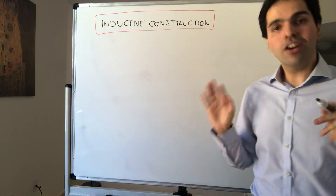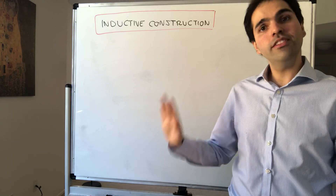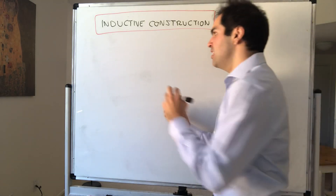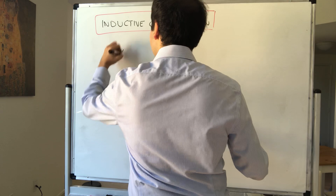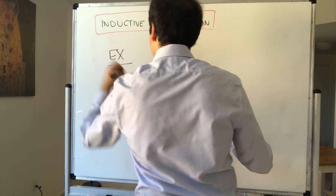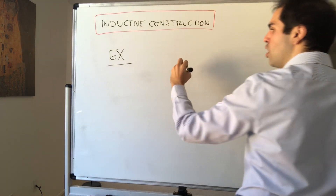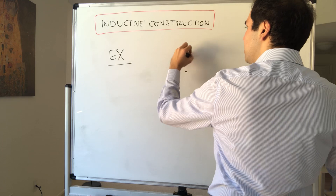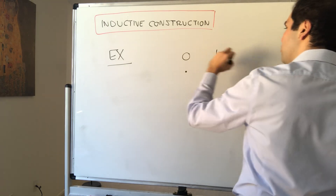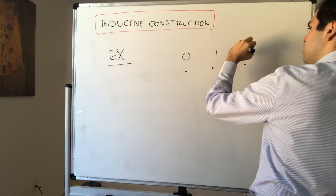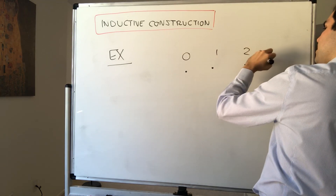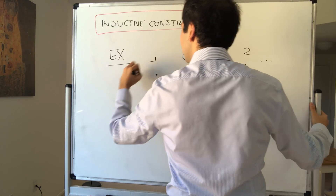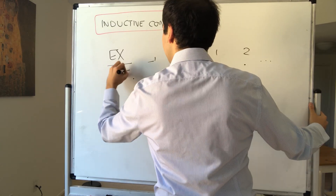Consider the following sequence, which may or may not be familiar from previous courses. It has to do with rows. In the first row, let's put all the integers: 0, 1, 2, and so on, but also −1, −2, and so forth.